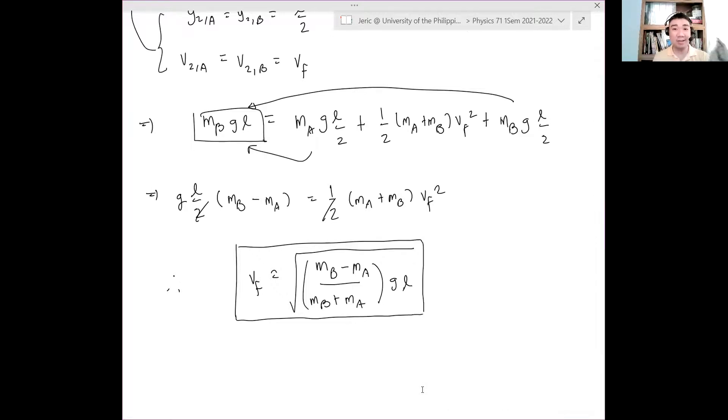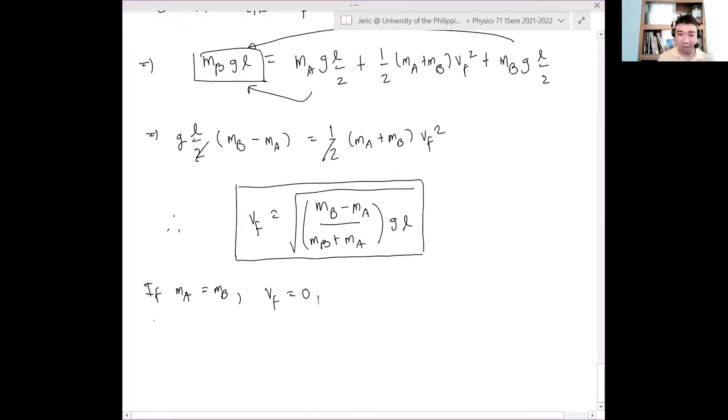Now if the masses are equal, what will happen? If MA equals MB, what will happen? Of course, the final velocity will die, which should make sense, because if the masses are equal and the height is equal, it won't move. The Atwood's machine won't move.